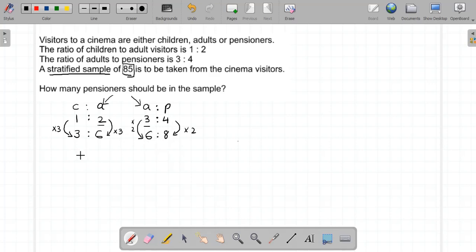So now I can write it as a ratio of children to adults to pensioners, so I've got 3:6:8.